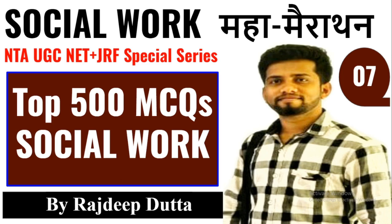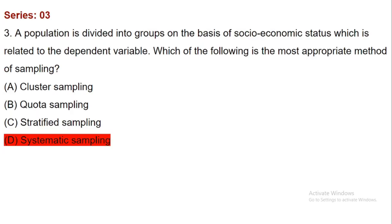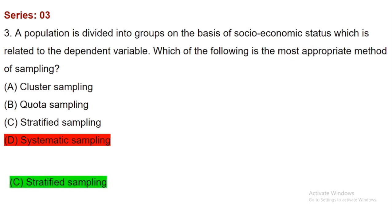In my series number three, I made two mistakes with the answer key. I would like to correct those. For question number three — 'A population is divided into groups on the basis of socio-economic status, which is related to dependent variable; which of the following is the most appropriate method of sampling?' — the correct answer should be stratified sampling, not systematic sampling. My explanation was correct but the sampling method I mentioned was wrong.